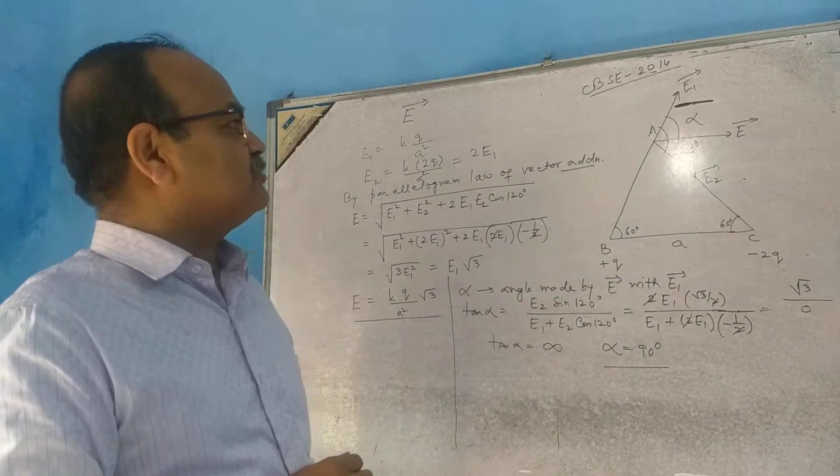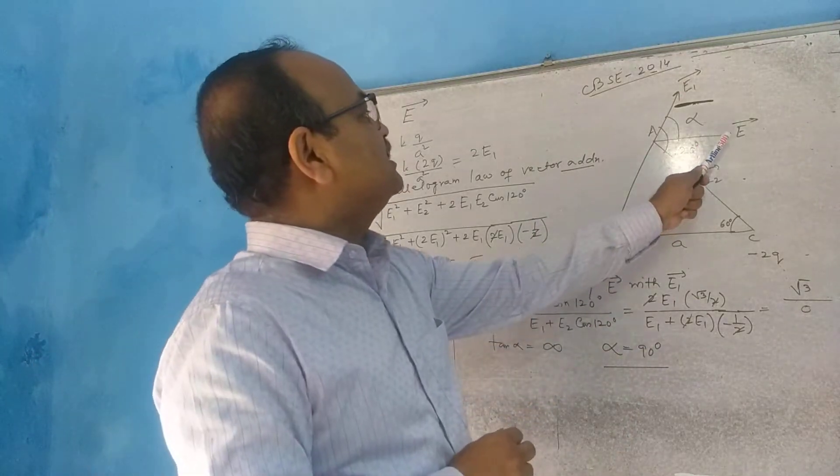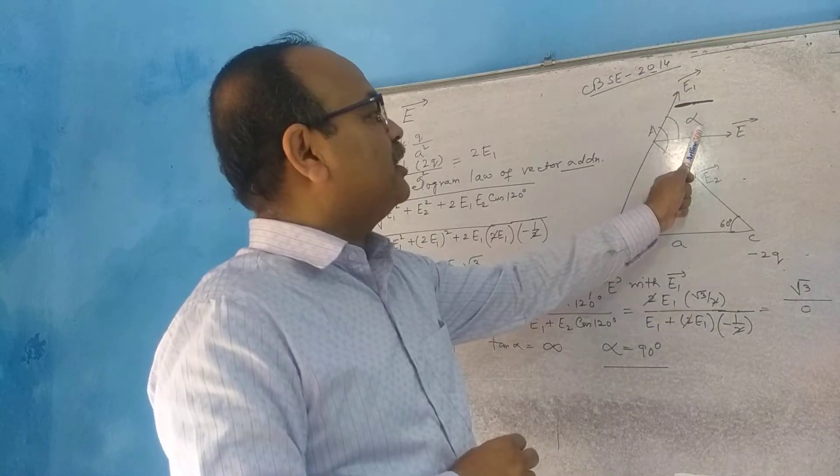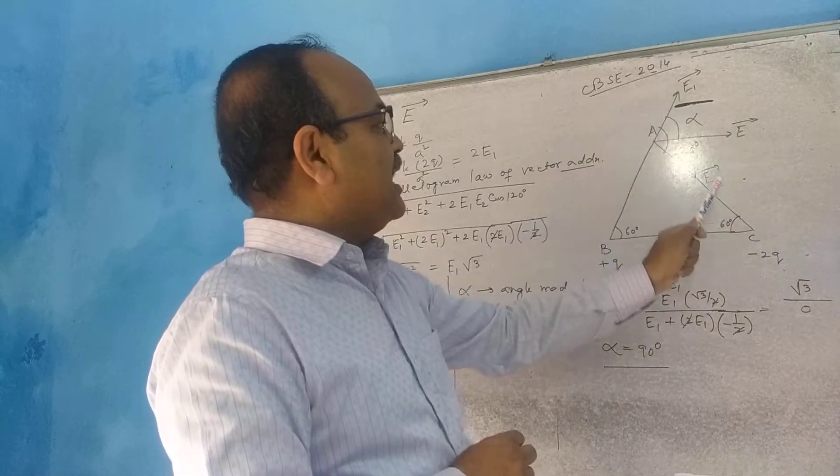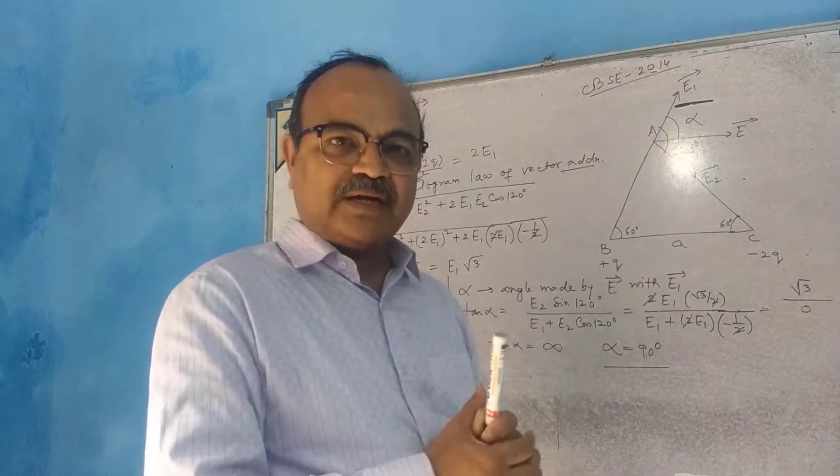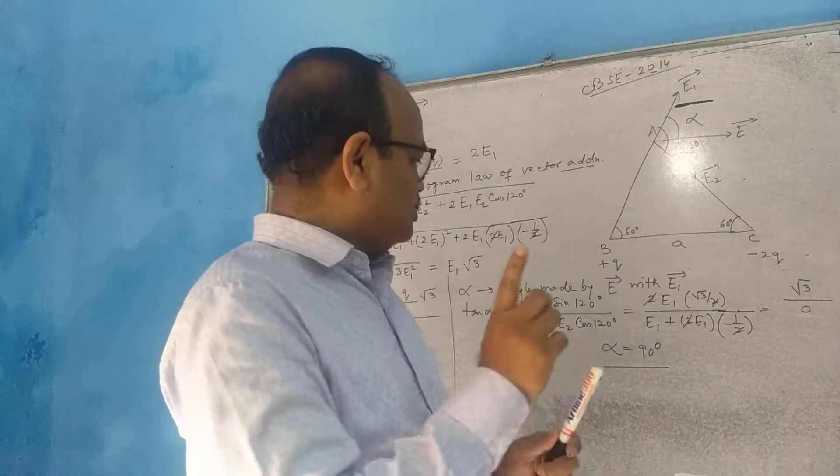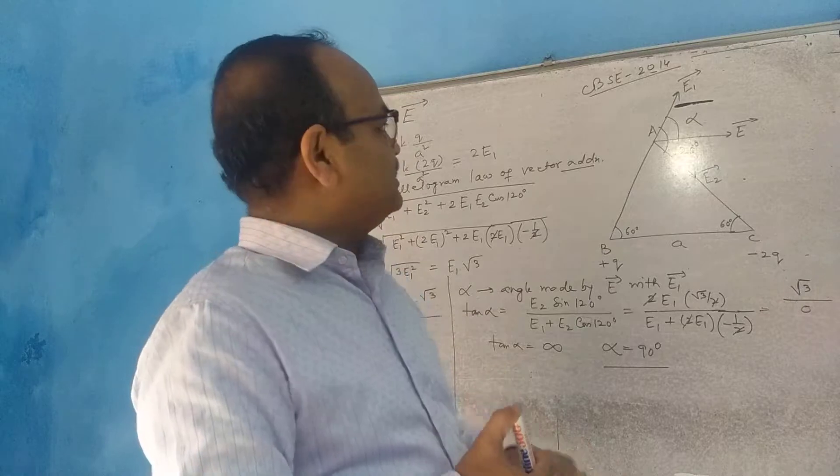Alpha is equal to 90 degrees means this E vector will form an angle of 90 degrees with one vector and 30 degrees with E2 vector. So what is its direction?